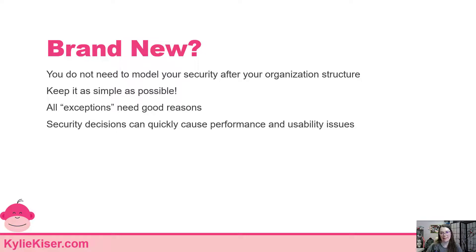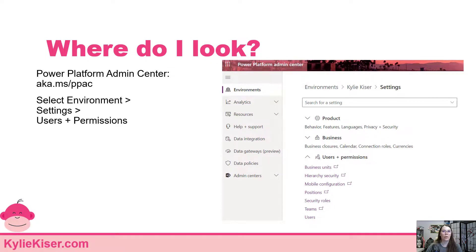Keep in mind that any security decisions can potentially cause usability or performance issues — that includes usability for the users but also for you and other administrators. You want to make sure others can take care of this system if you're not there. Make sure you are balancing exceptions and requirements with real-life constraints, supportability, and usability. When looking for these settings, go to the Power Platform Admin Center, select your environment, and you'll see security roles, teams, and users on the right-hand side.